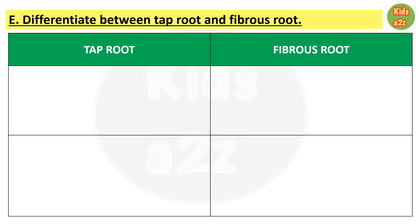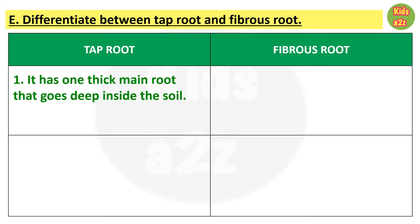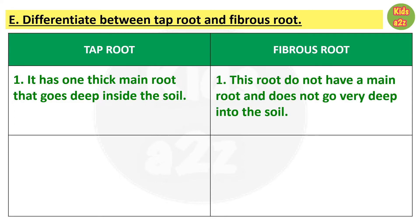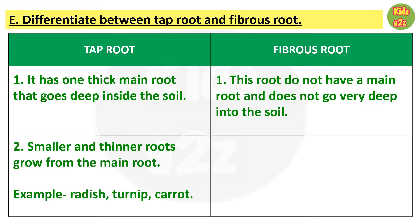In this worksheet, kids need to write the differences between tap root and fibrous root. Under tap root, they can write: each has one thick main root that goes deep inside the soil. Under fibrous root: this root does not have a main root and does not go very deep into the soil. Another point is smaller and thinner roots grow from the main root.